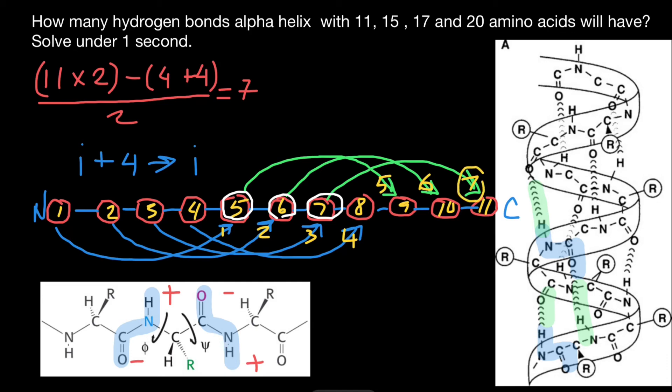Let's now do the same for 15 amino acids. So we are going to have 15 amino acids times two, minus four for C-terminus, plus four for N-terminus, and divided by two. So 30 minus eight is going to be 22, and 22 divided by two is going to be 11 hydrogen bonds.